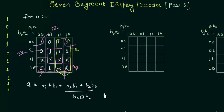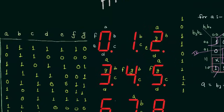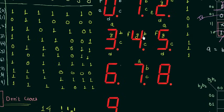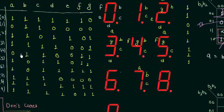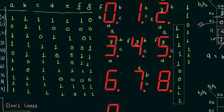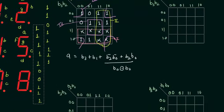Similarly, we will do B. For the B segment, so this is our B segment, this one. I will copy it and paste to the other K-map. Copy and then paste. Let's take it to the next K-map.